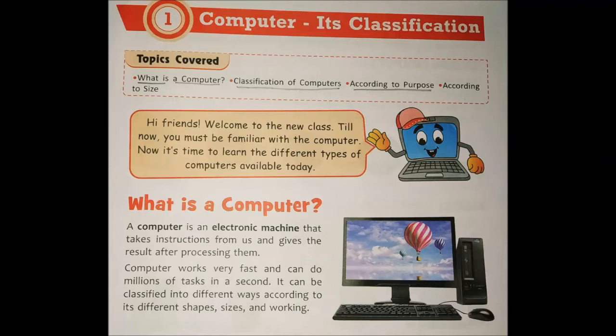Computer works very fast, can do millions of tasks in a second. It can be classified into different ways according to its different shapes, size and working. Computer performs millions of tasks in just seconds and can be classified according to its shapes, size and working ability.